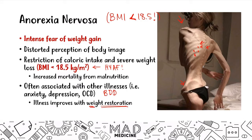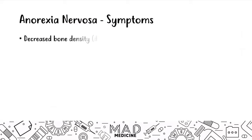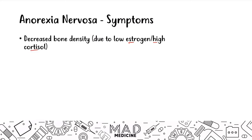Symptoms of anorexia include decreased bone density due to low estrogen and high cortisol. Because of low fat stores, estrogen production drops. Meanwhile, the caloric restriction raises cortisol, putting the body in chronic fight-or-flight mode. This leads to chronically decreased bone density, seen as osteoporosis or osteopenia.